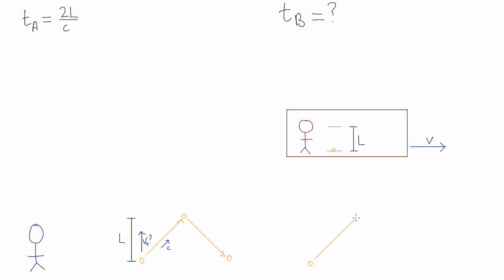So the photon is moving diagonally at speed c. So where does the horizontal motion come from?